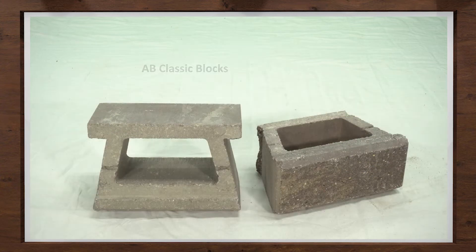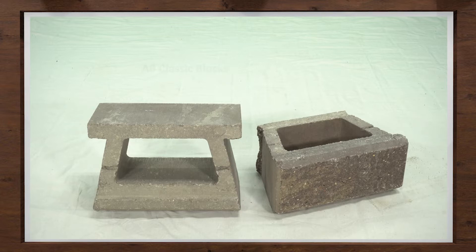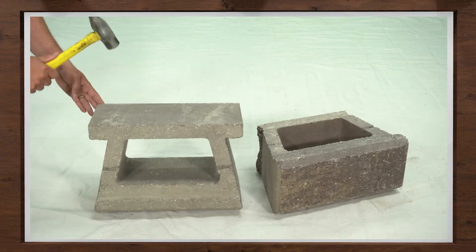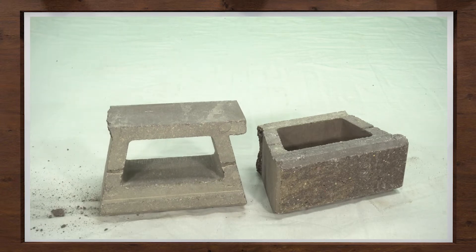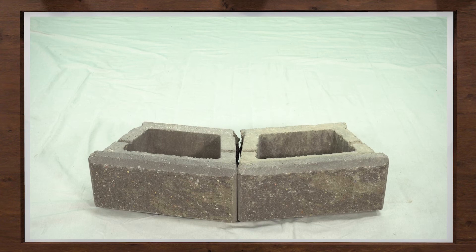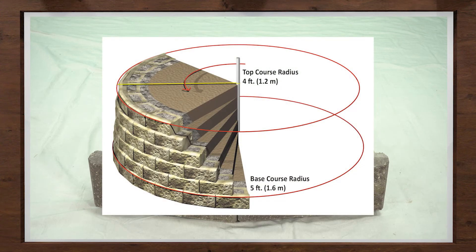What I have here is two A-B classic blocks. Outside curves will require the removal of one or both of the back wings of the block, depending on the radius of the curve. To properly remove the wings, use a hammer and strike the wing from the back of the block towards the front. With the wings removed, you can now build the outside curve. One thing to remember is as the wall gets taller, this radius will get tighter, so the base course needs to be installed accordingly to ensure when you reach the top of the wall, the blocks can still be placed.